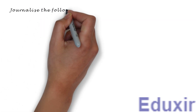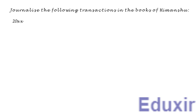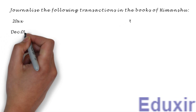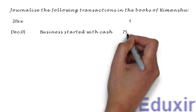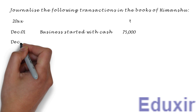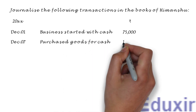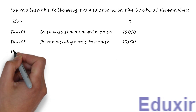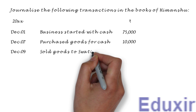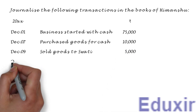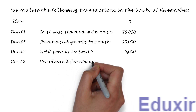Journalize the following transactions in the books of Himanshu. On 1st December, business started with Cash 75,000 Rs. On 7th December, Purchased Goods for Cash 10,000 Rs. On 9th December, Sold Goods to Swathi 5,000 Rs. On 12th December, Purchased Furniture 3,000 Rs.